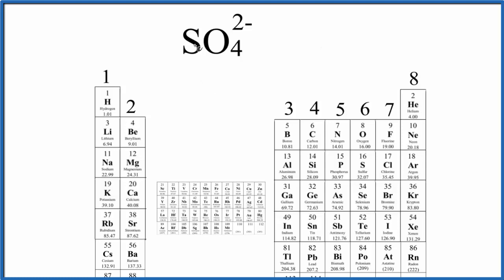So all we have to do is look at sulfur here. Sulfur in group 16 has 6 valence electrons, plus oxygen. That's in group 16 as well. That has 6, but we have 4 oxygen atoms.